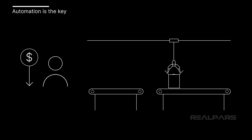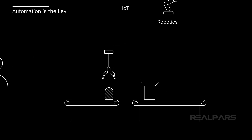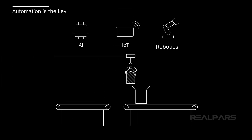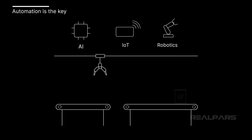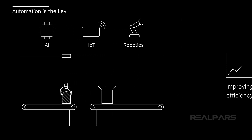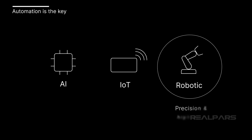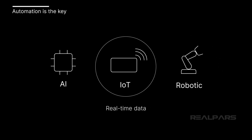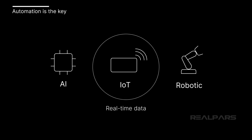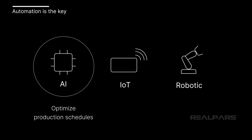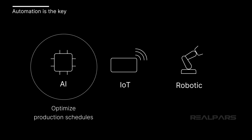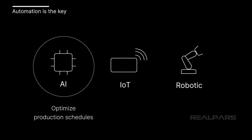With the reshoring of manufacturing, companies will need to strive to offset higher labor costs. Automation strategies such as robotics, the Internet of Things, and artificial intelligence can provide this offset by improving efficiency and reducing the need for manual labor. Robotics can provide precision parts placements at higher rates of speed than is possible with human labor. IoT provides detailed real-time data from the plant floor to application servers in the cloud, where AI can optimize production schedules and make operational decisions to minimize costs and maximize throughput.